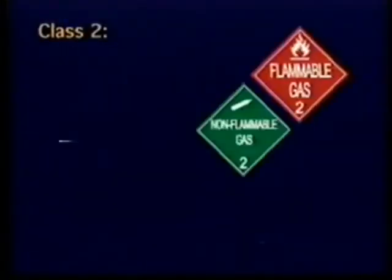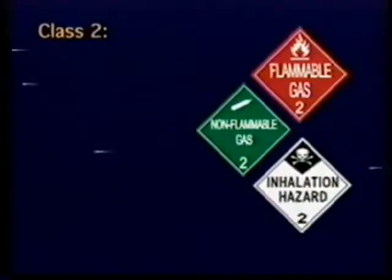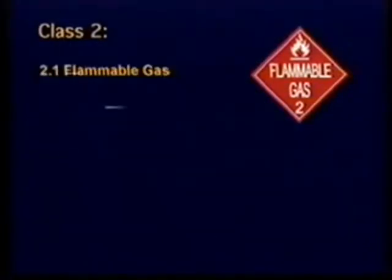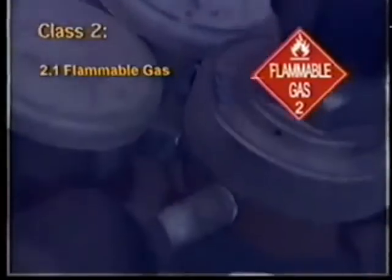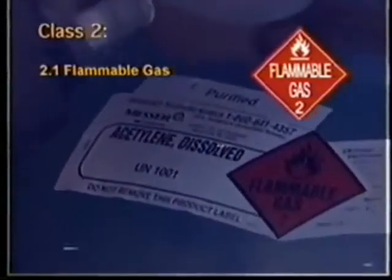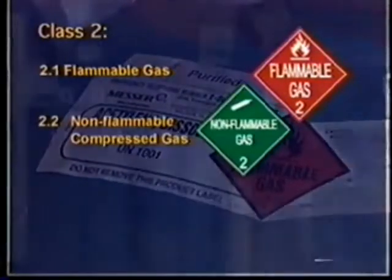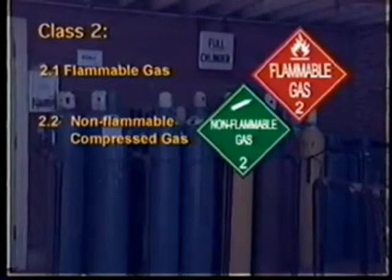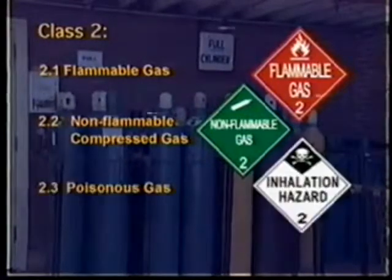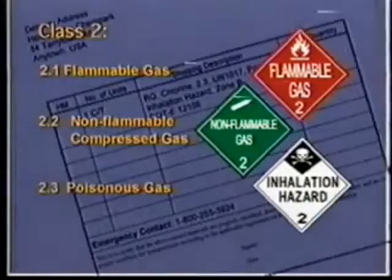Class 2: Gases. Class 2 is broken down into three divisions. Division 2.1 is flammable gas, such as acetylene. Division 2.2 is non-flammable compressed gas, such as nitrogen. Division 2.3 is poisonous gas, such as chlorine.